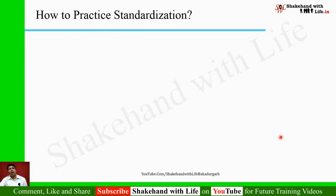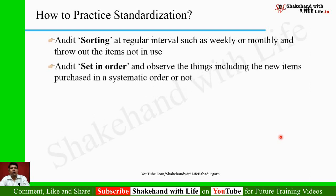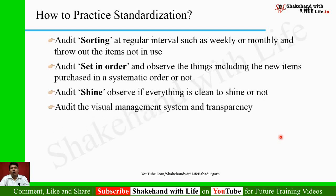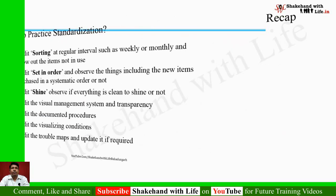To practice standardization: audit Sorting at regular intervals such as weekly or monthly, and throw out items not in use. Audit Set in Order and observe that things, including new items purchased, are in a systematic order. Audit Shine and observe if everything is clean. Also audit the visual management system, transparency, documented procedures, visualizing conditions, and travel maps — updating them if required.